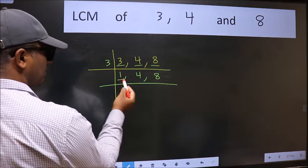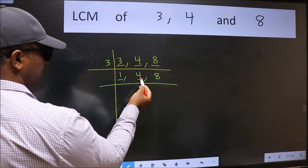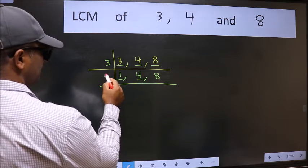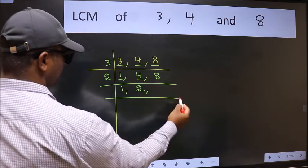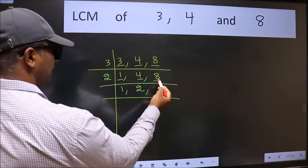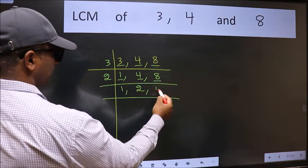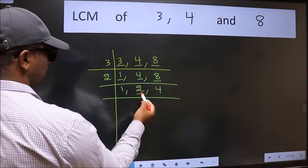Now we got 1 here. So focus on the next number 4. 4 is 2 2s 4. The other number 8, when do we get 8 in 2 table? 2 4s 8.